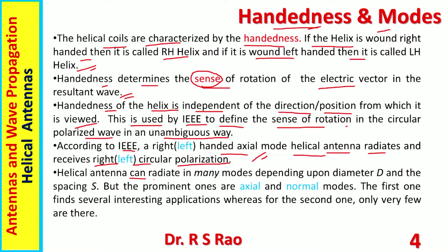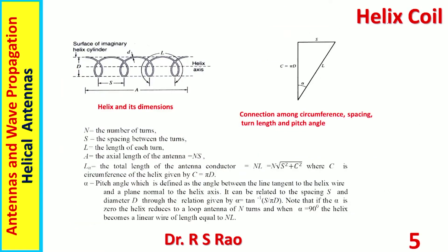A helical antenna can radiate in many modes depending upon diameter d and spacing, but the prominent ones are two: axial and normal modes, which were already introduced. The axial mode finds several interesting applications whereas the normal mode has only very few. Here is shown the structure of a helical coil along with the terminology created around these coils.